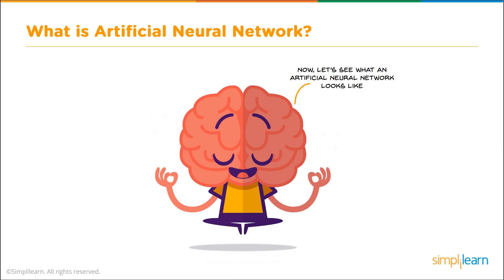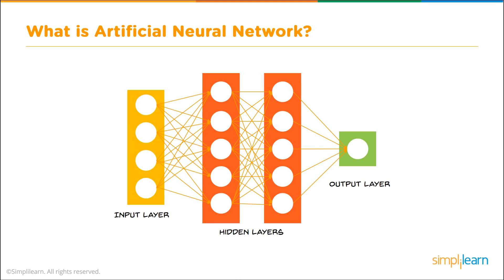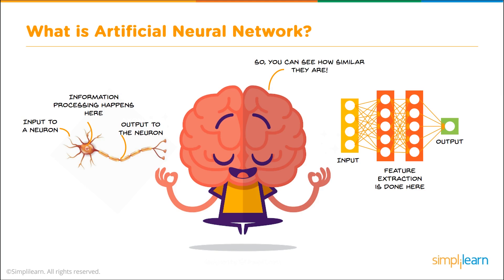Now let's see what an artificial neural network looks like. We have an input layer — that could be an array of data, where each white dot in the yellow bar represents a pixel in a picture. Then you have lines connecting to the hidden layers, which are your weights. They add all those up on the hidden layers, kind of like a cell does something with all the inputs, and then puts an output into the next hidden layer, and so on into the output layer. You can see how they are similar: we have an input, then each hidden layer acts like a neuron, passing it to the next one, and then you have an output to the real world.